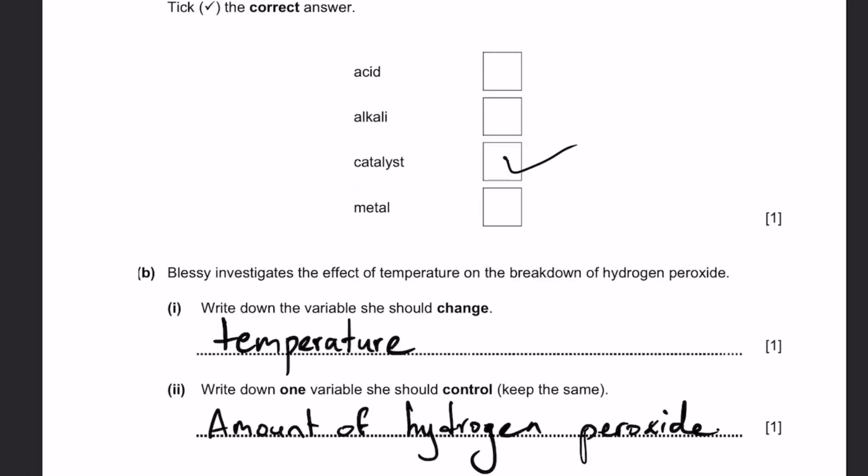Part B. Blessy investigates the effect of temperature on the breakdown of hydrogen peroxide. Question 1. What variable should she change? That'll be the temperature, the independent variable. Question 2. What variable should she control or keep the same? That is the amount or volume of hydrogen peroxide which is breaking down.